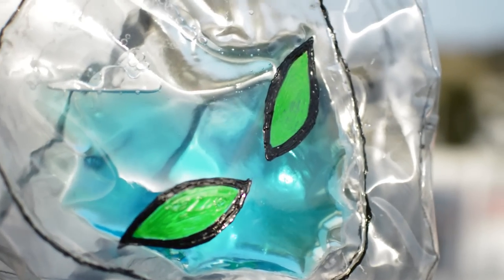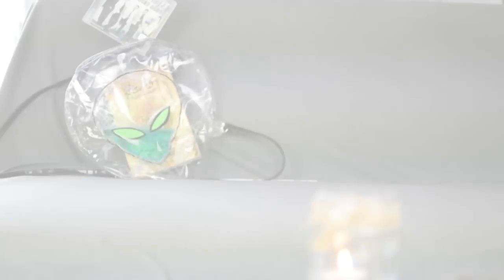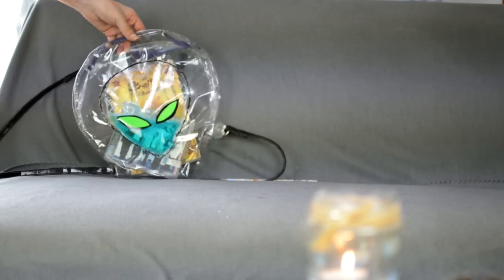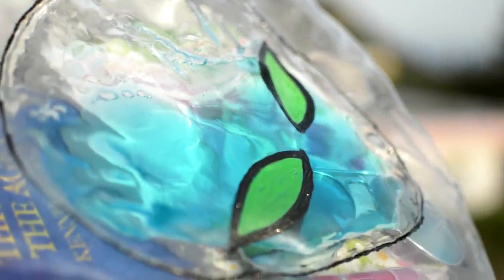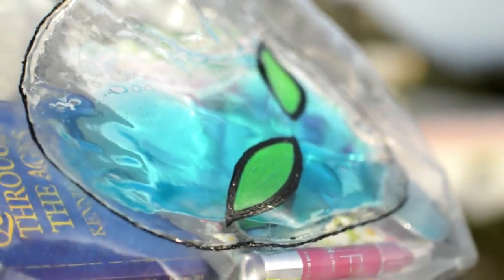This week we're making a 90s inspired vinyl backpack in the shape of an alien face with a jelly alien face right in the front. So this is going to be a long tutorial so let's not kill any more words and jump right into it.